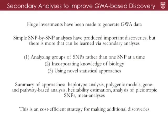This proposal is related to secondary analyses of this type of data. Huge investments have been made to generate genome-wide association data — these case-control studies involve thousands of individuals whose blood is used to measure thousands of genomic features, making them very expensive. The standard SNP-by-SNP analysis produces important discoveries, but there's much more that can be learned from secondary analyses. We proposed a number of approaches that go further, including strategies focused on analyzing groups of SNPs rather than one at a time.